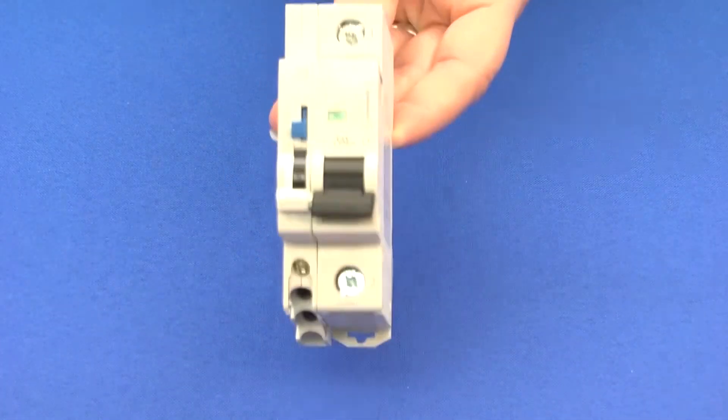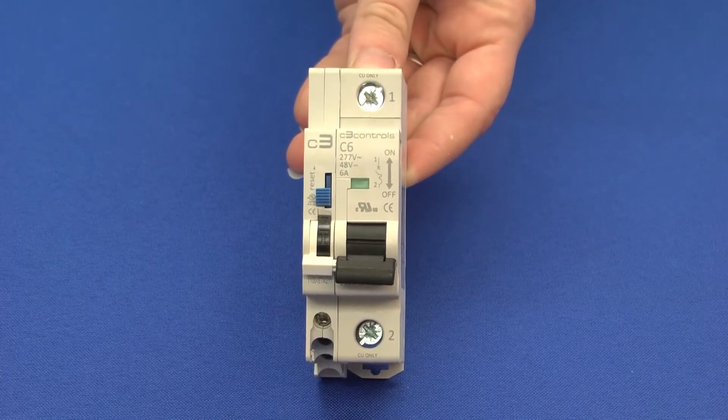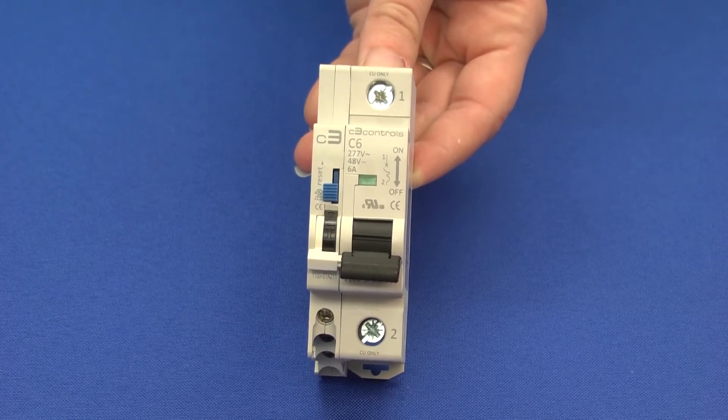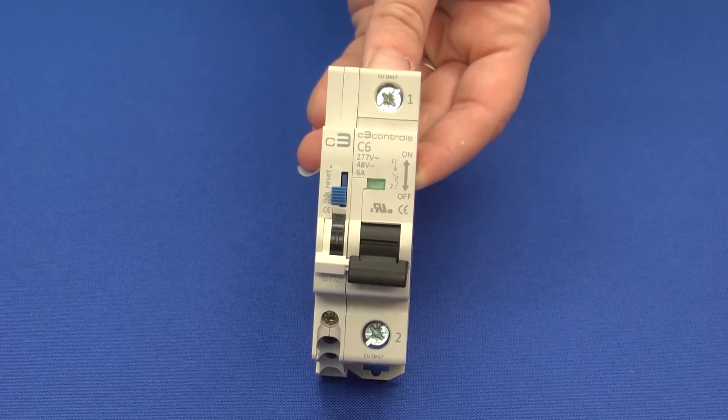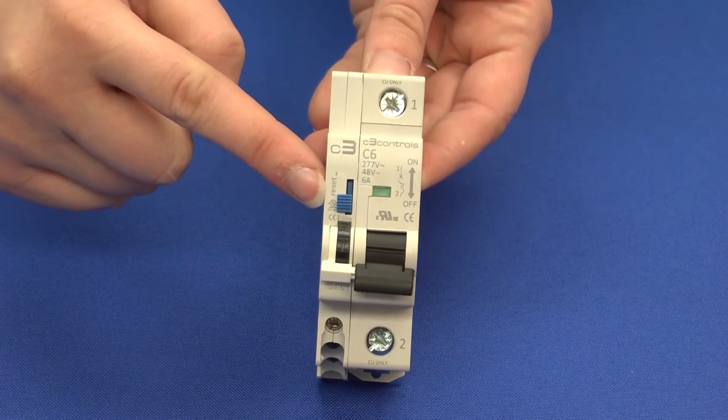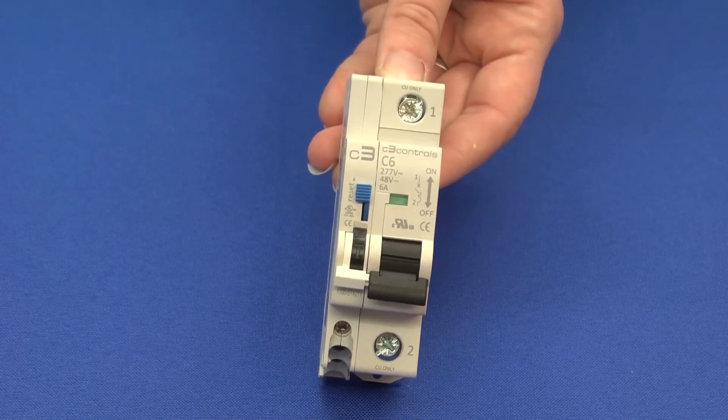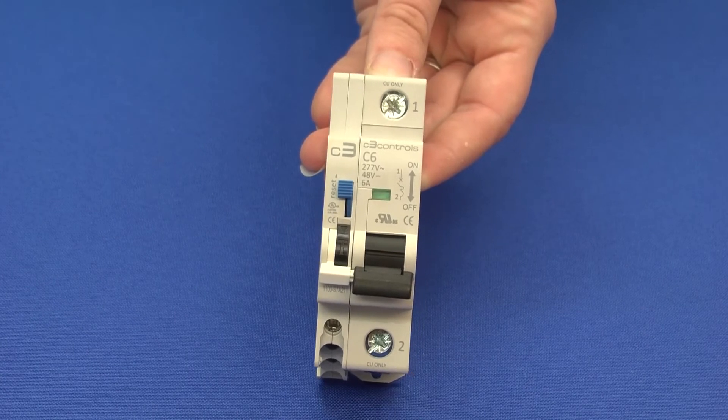Now let's move on to the functionality of the alarm auxiliary contact. You can tell that the circuit breaker connected to this contact has tripped based on the blue button indicator being in the down position. It can be reset by switching it into the reset position. This is also true with the regular auxiliary contact.